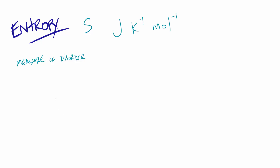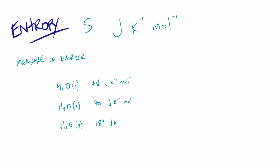The best way to look at entropy is to apply it to various situations. If we look at water in its three states — solid ice, liquid water, and gaseous steam — the entropy values are: solid 48 J/K/mol, liquid 70 J/K/mol, and gas 189 J/K/mol. As we move from solid through liquid to gas, entropy values increase: 48 to 70 to 189.